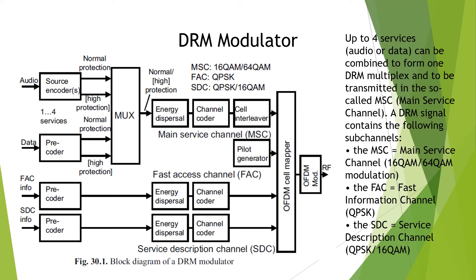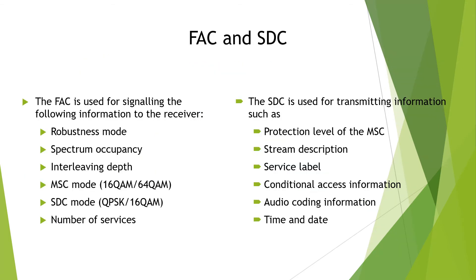Up to four services — audio or data — can be combined to form one DRM multiplex and transmitted in the Main Service Channel (MSC). A DRM signal contains the following sub-channels: the MSC using 16-QAM and 64-QAM modulation; the FAC (Fast Access Channel) using QPSK; and the SDC (Service Description Channel) using QPSK or 16-QAM. The FAC signals the following information to the receiver: robustness mode, spectrum occupancy, interleaving depth, MSC mode, SDC mode, and number of services.